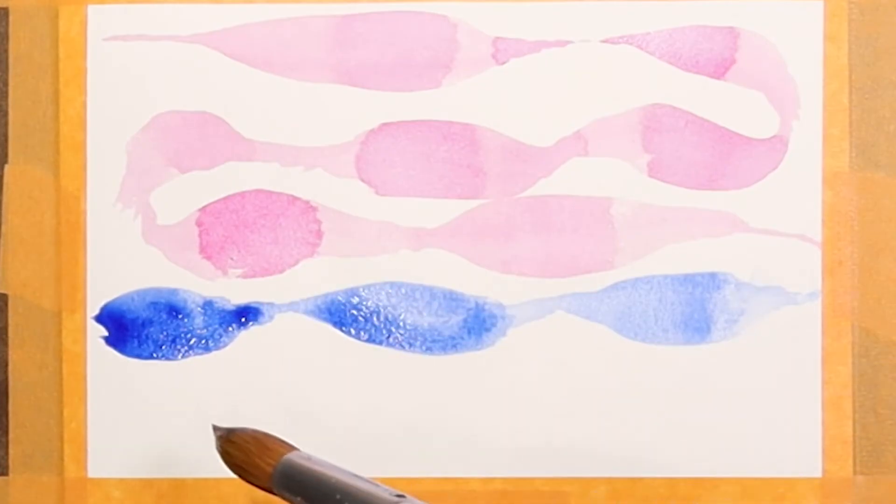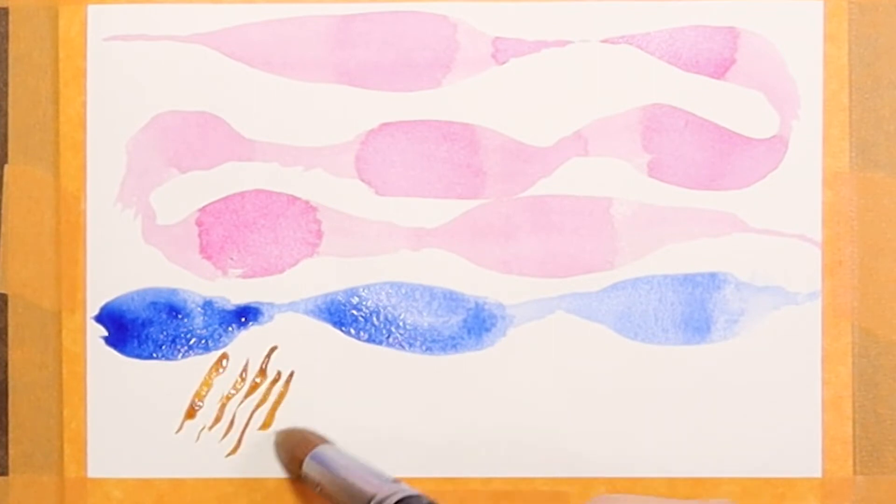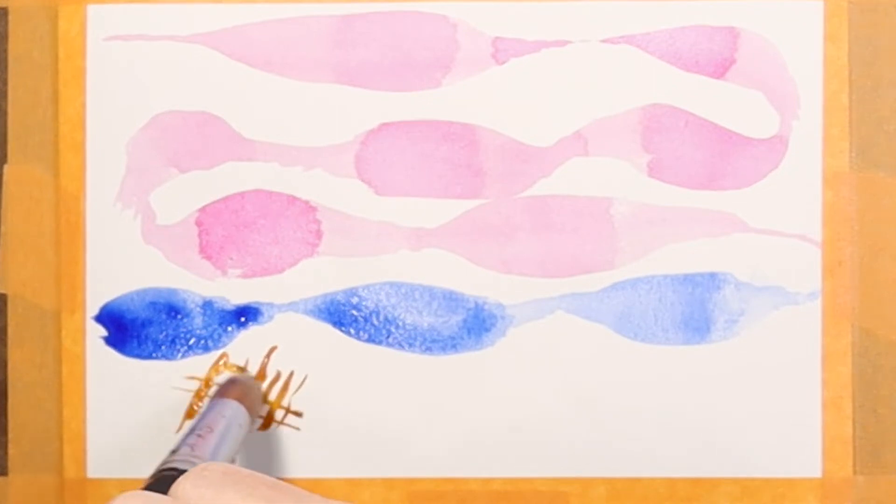Here's some nickel quinacridone gold, again with a real fine point. It's amazing with a number 20 round that you can create such fine lines.